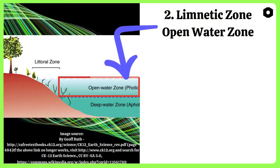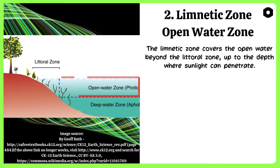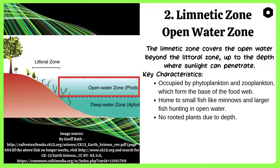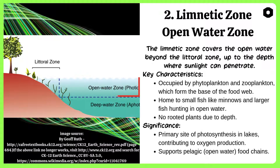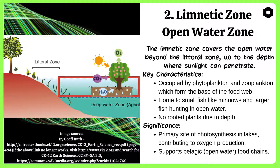Limetic zone — the open water zone. The limetic zone covers the open water beyond the littoral zone, up to the depth where sunlight can penetrate. It is occupied by phytoplankton and zooplankton, which form the base of the food web. It is home to small fish like minnows and larger fish hunting in open water. It has no rooted plants due to depth. Significance: It is the primary site of photosynthesis in lakes, contributing to oxygen production, and supports pelagic open water food chains.